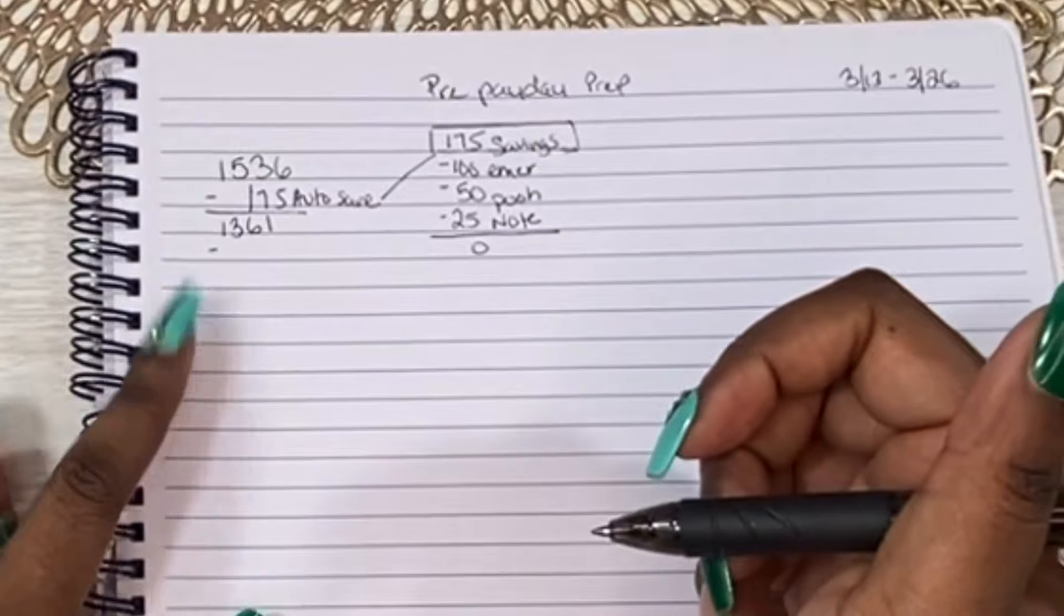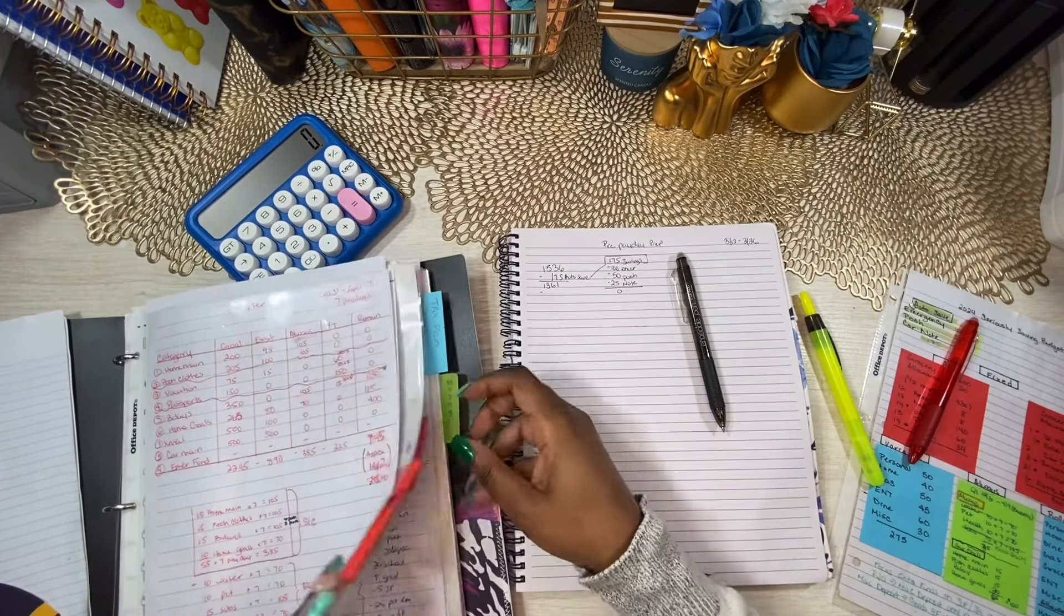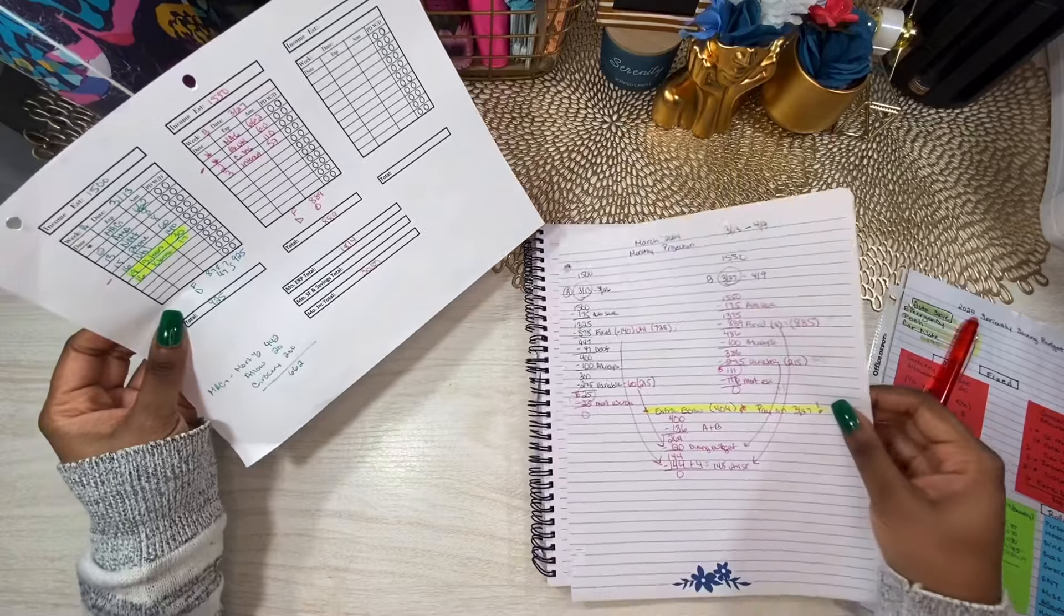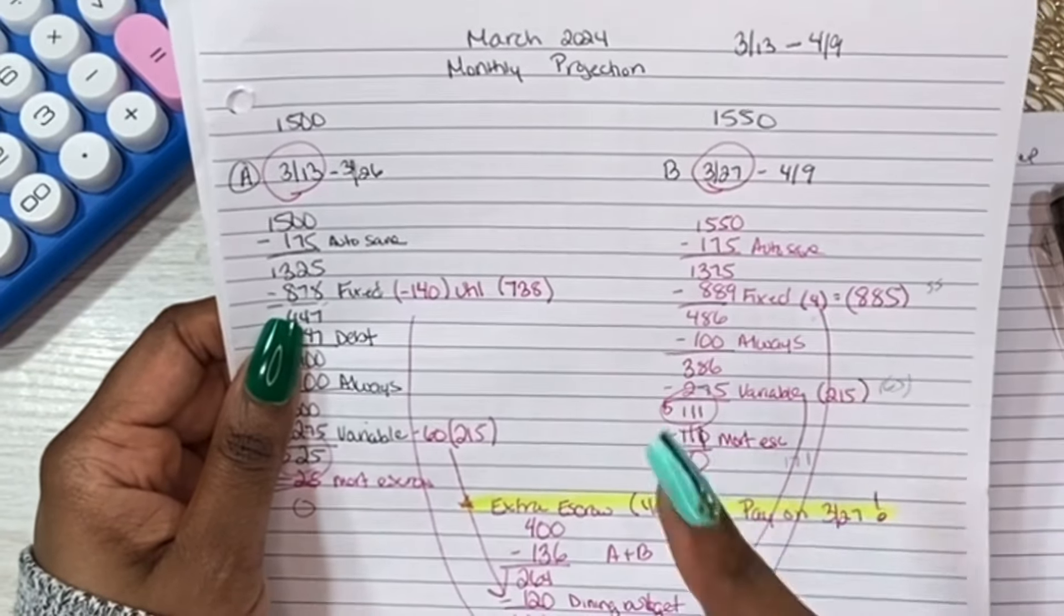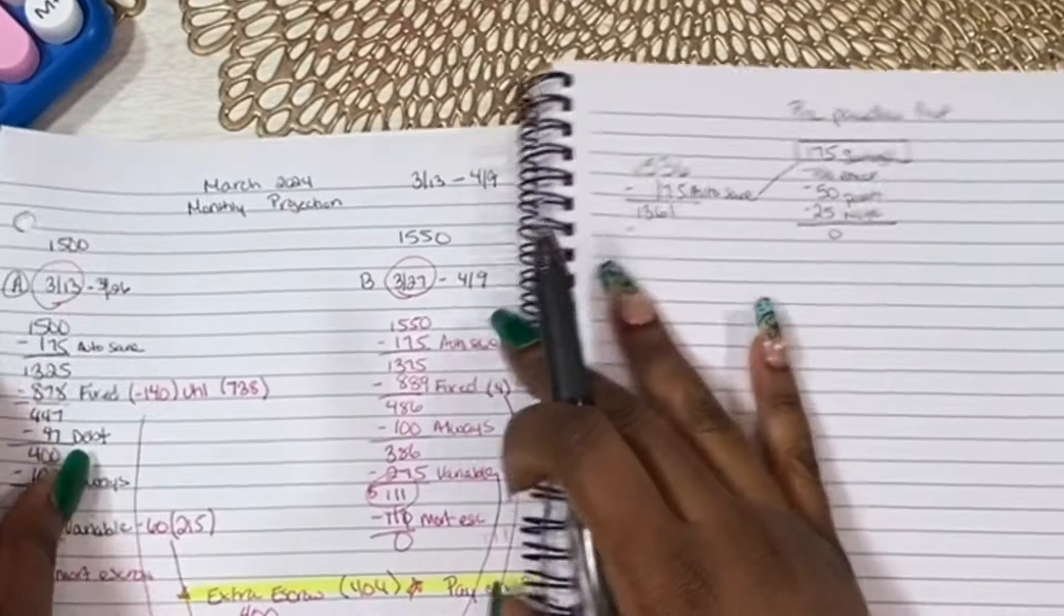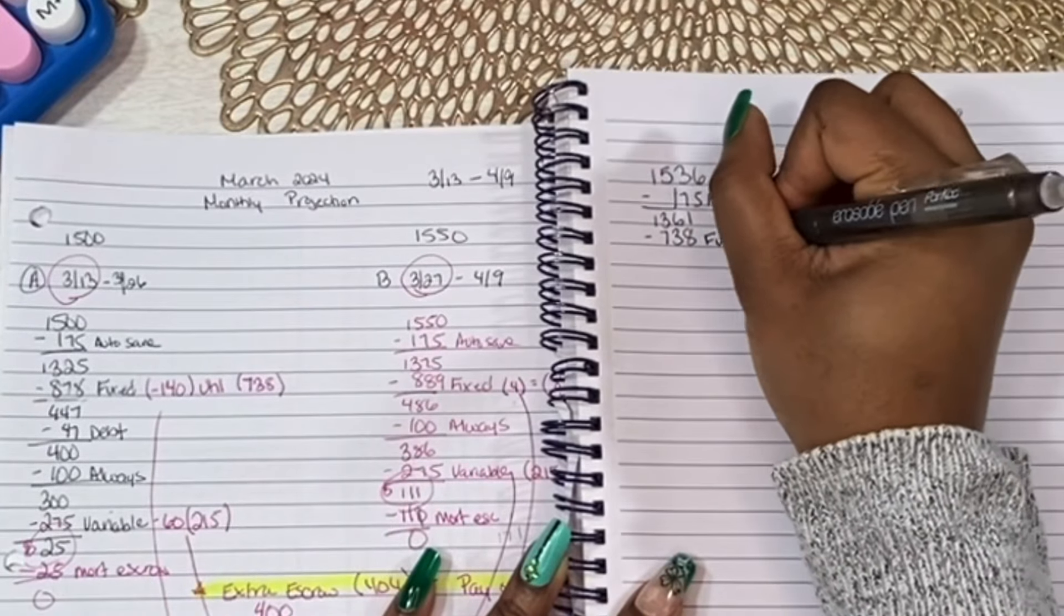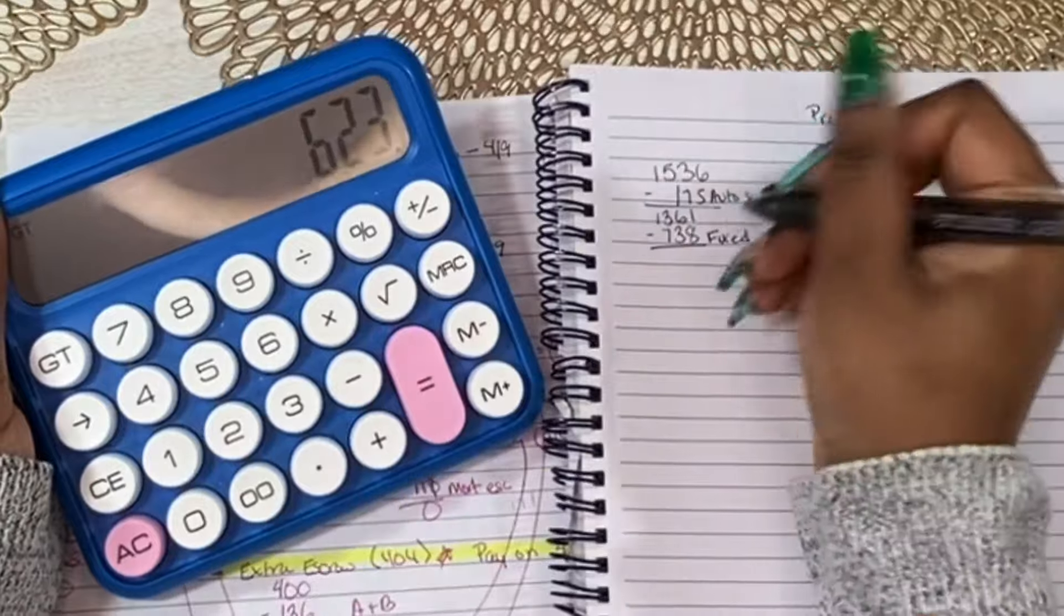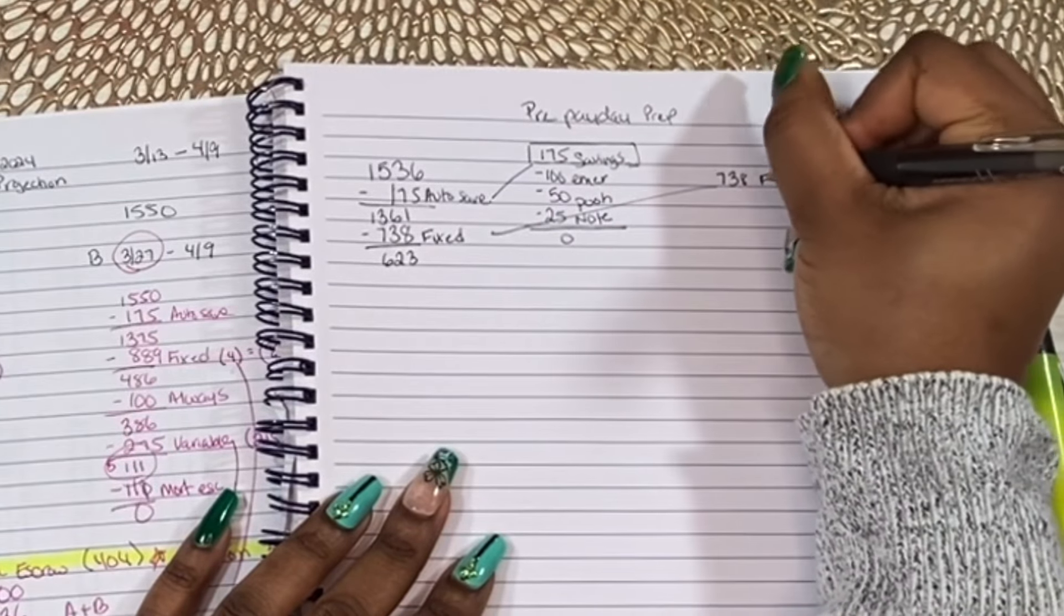So $1,361, the next thing that comes out is my bills. So my fixed expenses. I'm just going to pull that March budget out to help me do this. So for my fixed expenses, we said that they would be $878, but we decided $140 of that is going to come from our sinking fund for utilities. So I'm not going to include that. I just have to remember to pull that amount and put it back in the bank. So $738 is what we're going to take out for our fixed expenses, also known as bills. That brings us to $623.